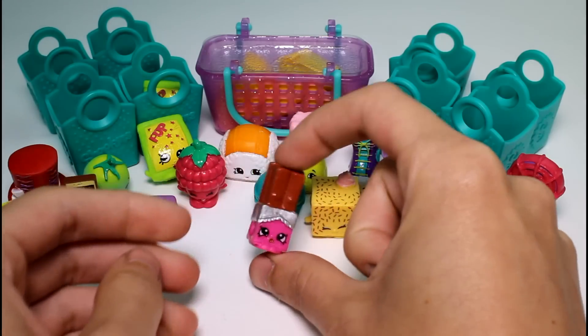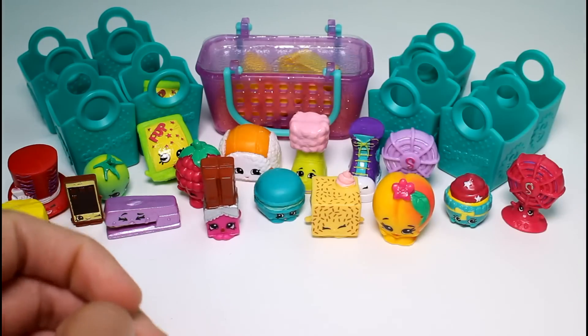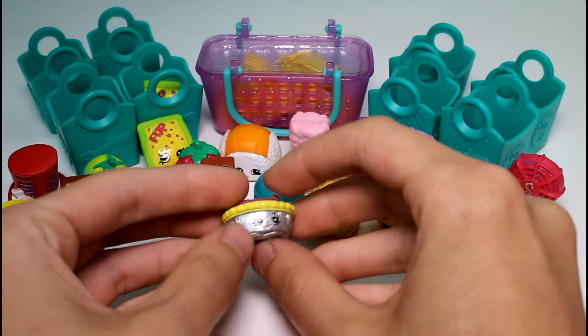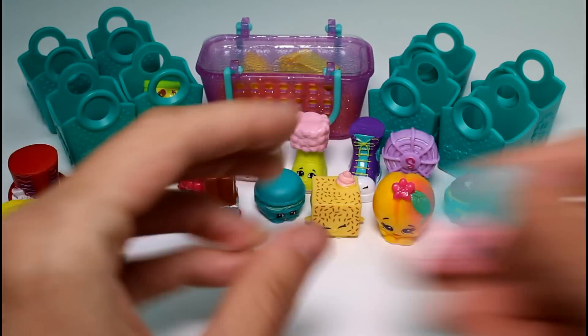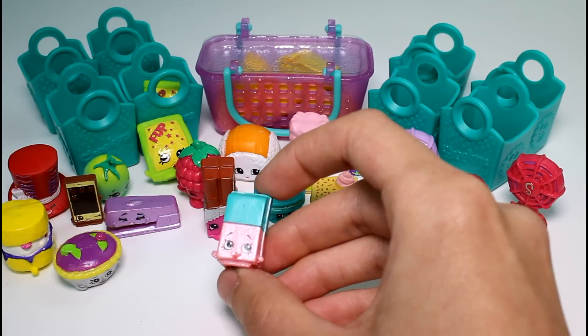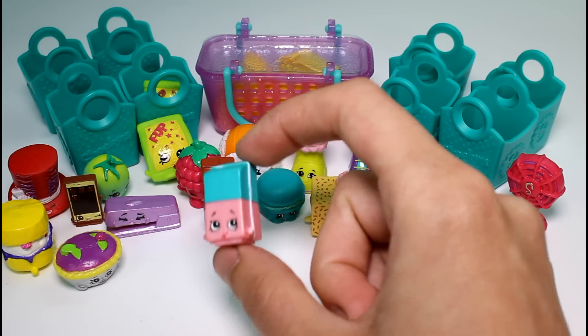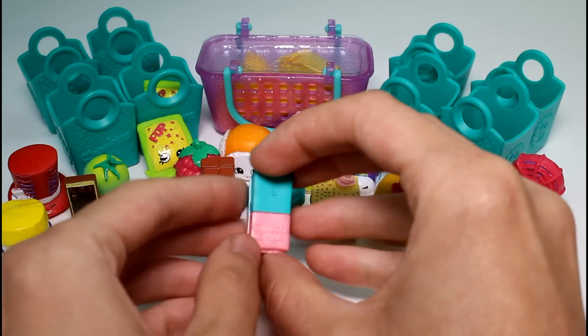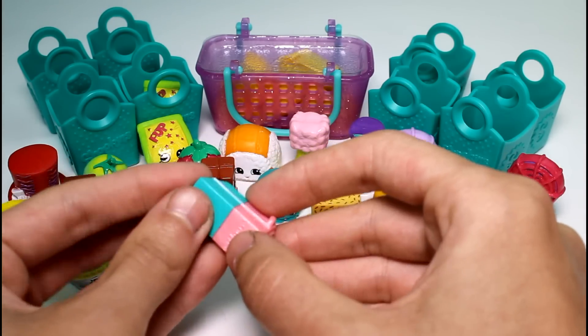And then we have Wanda Wafer. Wanda Wafer is a common. And then we have the Queen of Tarts. And she's a common. And then we have a Polished Pearl Shopkin. This is a special edition. This is an eraser. This is Erica eraser. She's so cute.